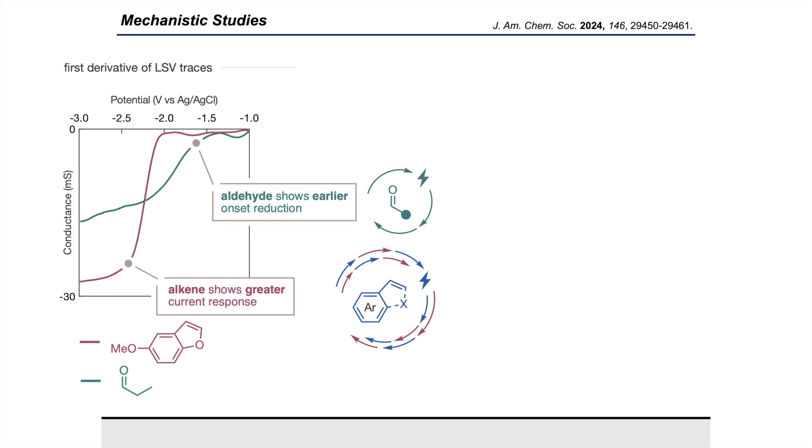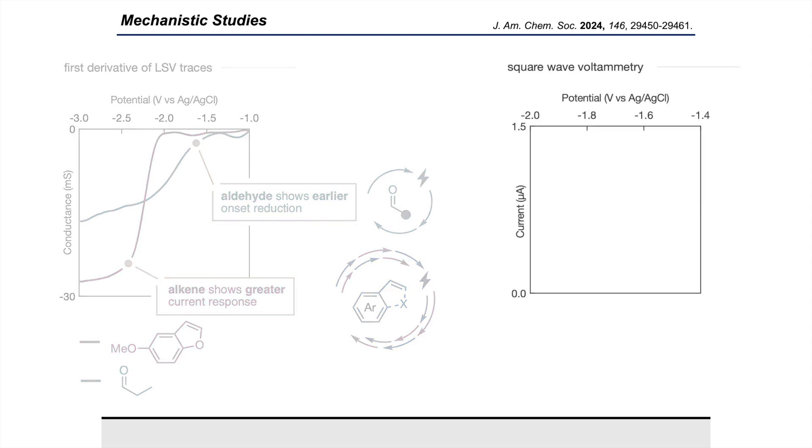We then provided further evidence for this using square wave voltammetry, which operates at a much faster time scale than linear sweep does. At that faster time scale we could actually observe two peaks for styrene, which we could ascribe to the first reduction to the radical anion and the second reduction to the dianion. This was really encouraging, as in square wave split peaks often imply fast electron transfer kinetics. At that same time scale we didn't observe even a single peak for propionaldehyde, highlighting this discrepancy in the electron transfer kinetics between the two components.